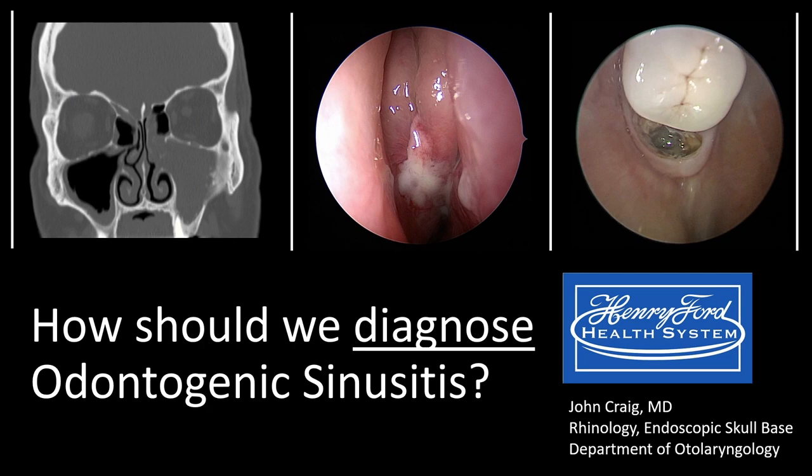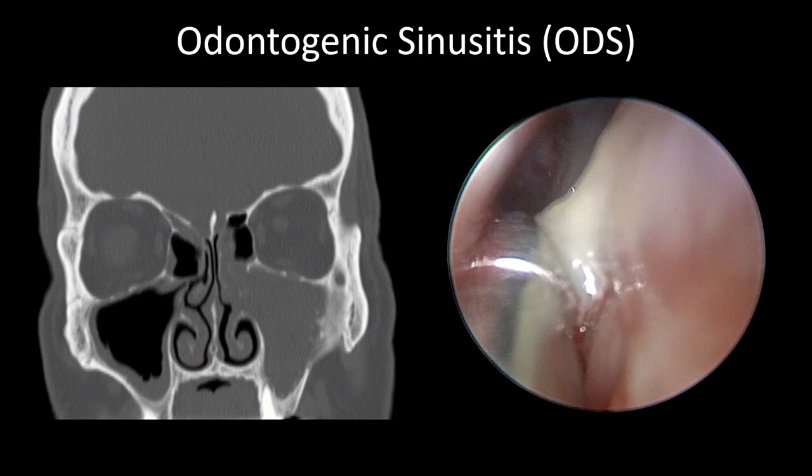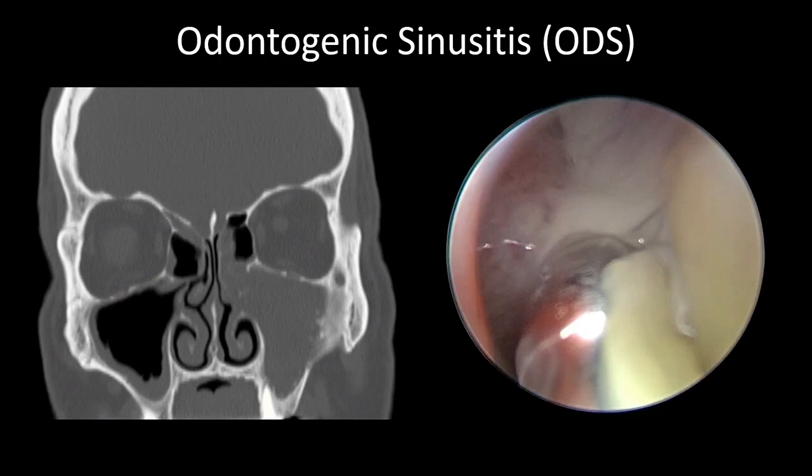I'm back to talking about odontogenic sinusitis. This time, we're going to talk about how to diagnose the condition. This is a classic case: maxillary opacification on CT, a periapical lesion with some bone erosion around that molar. You scope the patient's left side, and it's filled with pus and a lot of swelling. In my experience, and many others, this is often the nastiest infectious sinusitis we see.